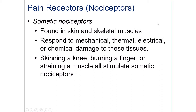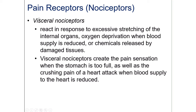The other type is called visceral nociceptors. These are pain receptors that register pain arising from places we don't have voluntary control over — essentially internal organs. They react to things like excessive stretching of an internal organ, which could happen when you eat too much, or if you have a gallstone stuck in a duct causing it to stretch. They also respond to chemicals released by damaged tissue and oxygen deprivation.